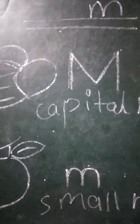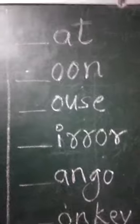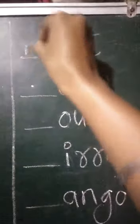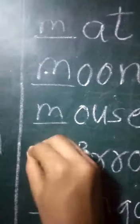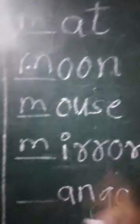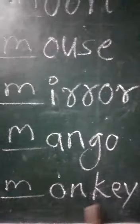Now let's come to the next page. Dear student, here we will write the first letter of all these words. First is M-A-T, mat. Second is M-O-O-N, moon. Third is M-O-U-S-E, mouse. Fourth is M-I-R-R-O-R, mirror. Fifth is M-A-N-G-O, mango. The last one is M-O-N-K-E-Y, monkey.